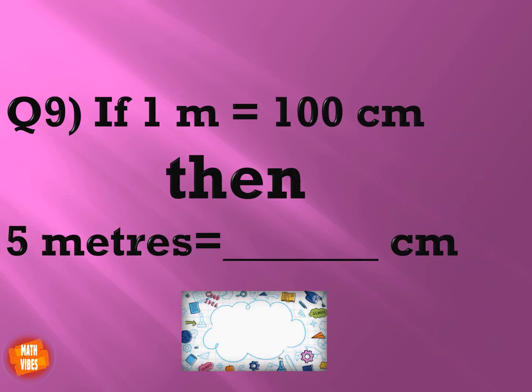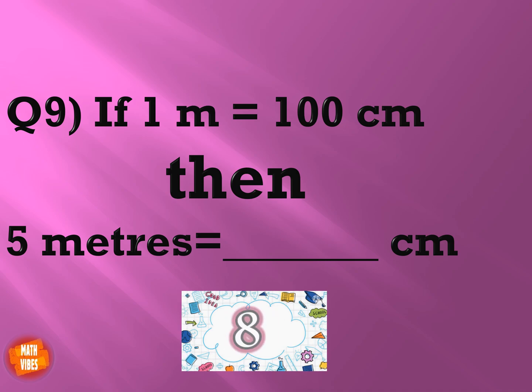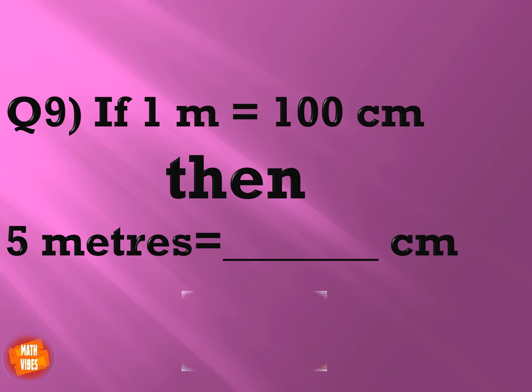The next question is: if 1 meter is equal to 100 centimeters, then 5 meters will be equal to? What will be the answer? Your time starts now. And the right answer is 500 centimeters. Yes, if 1 meter is 100 centimeters, then 5 meters will be equal to 5 into 100, that is 500 centimeters.